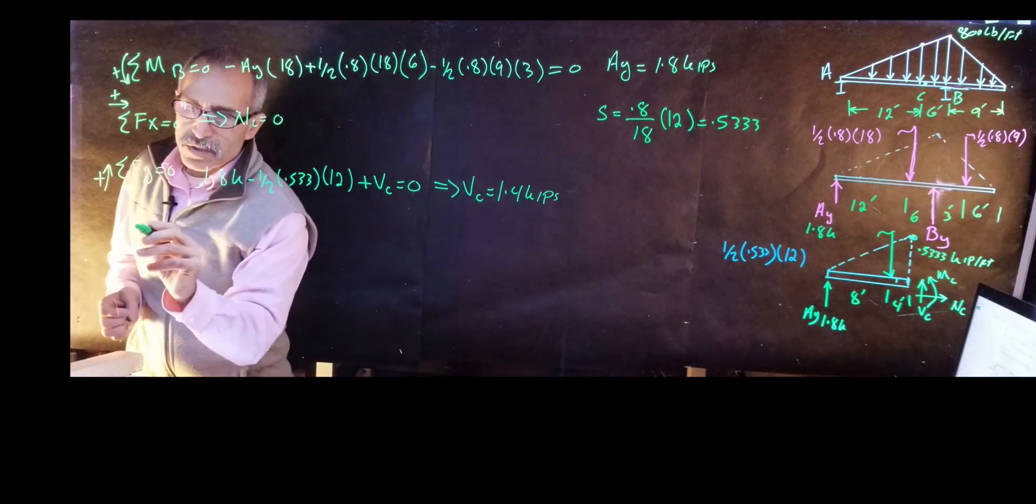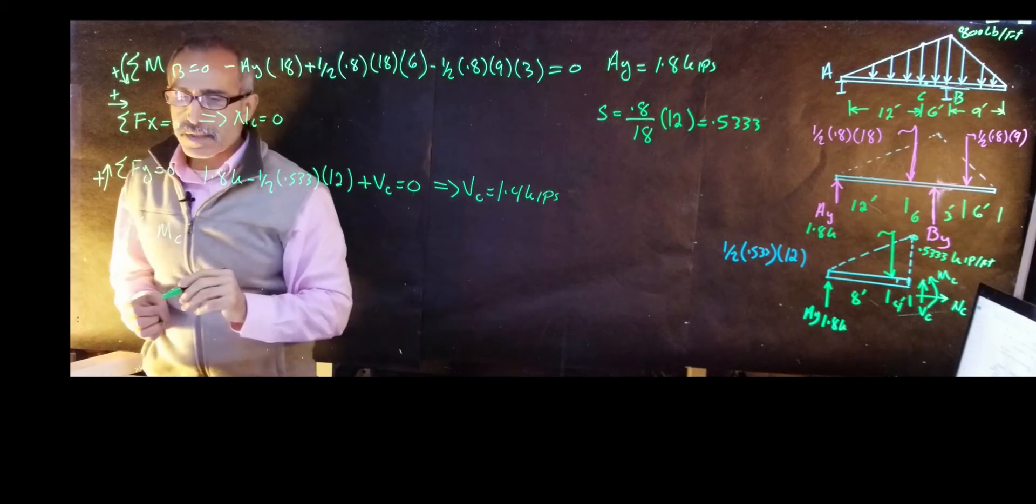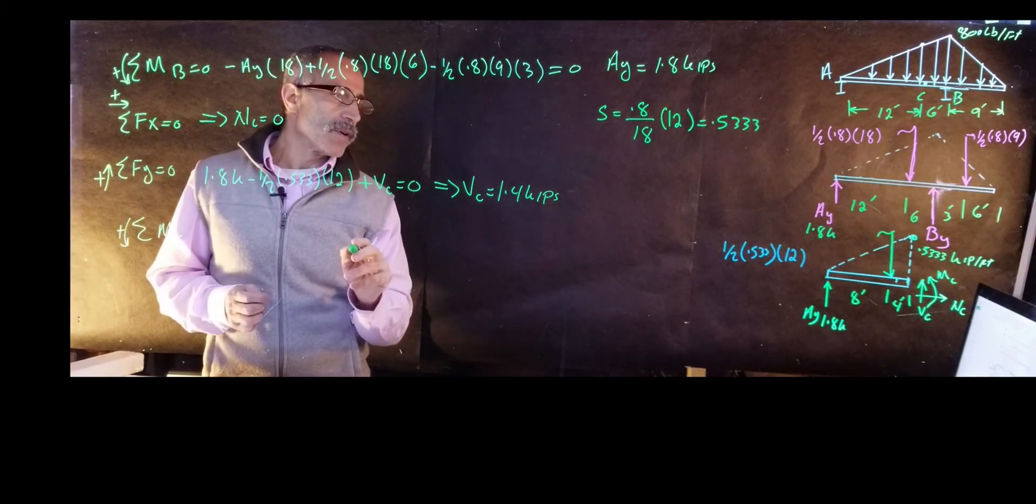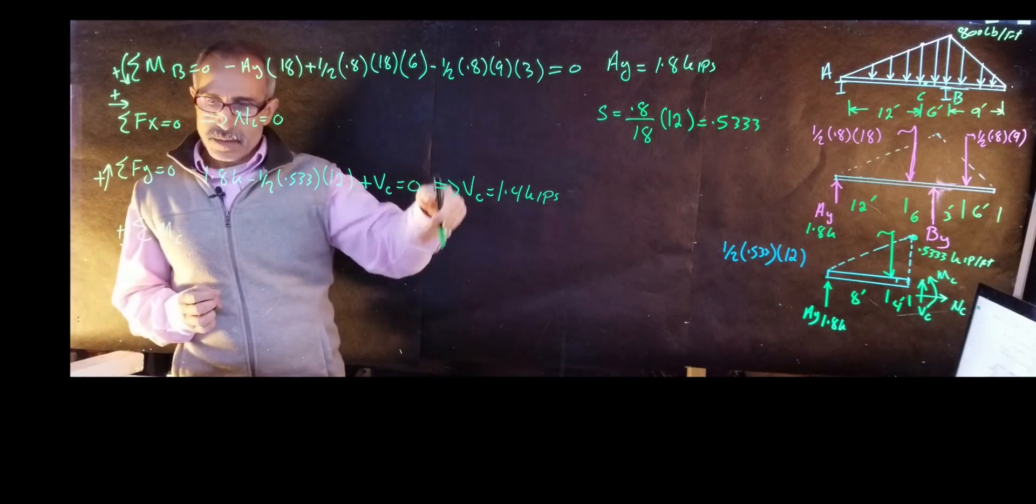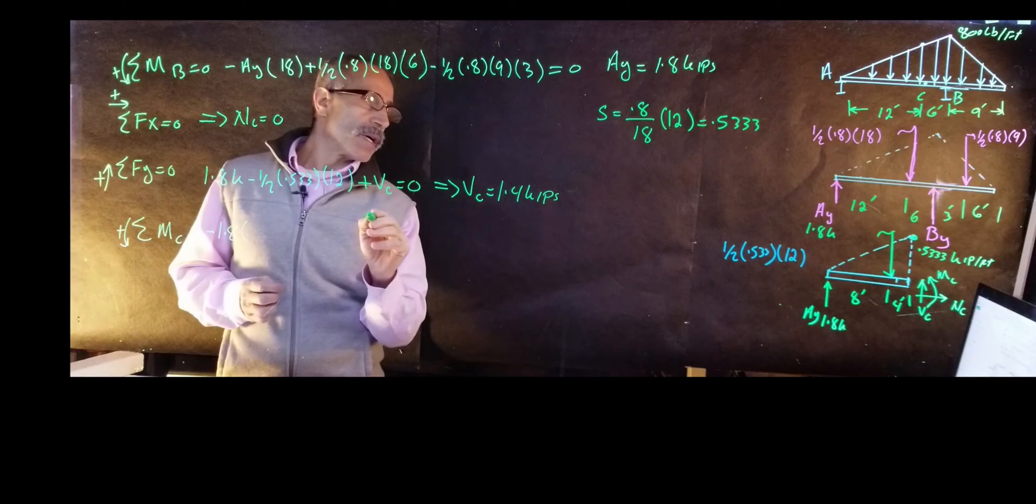Let's find out what our bending moment doing at that point. Summation moment about point C, counterclockwise is positive. We're going to have minus 1.8 multiplied by 12.